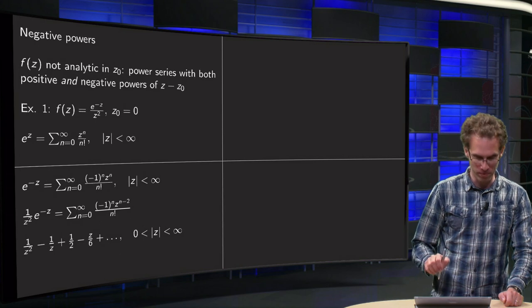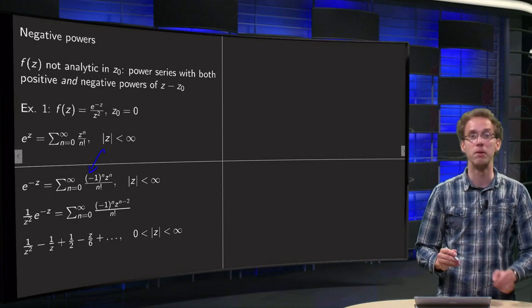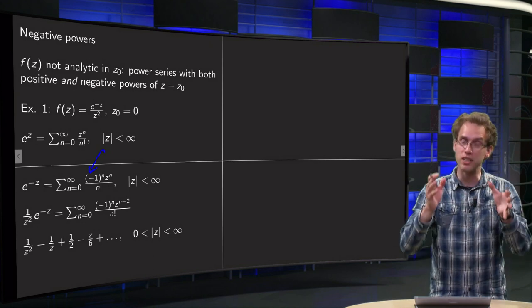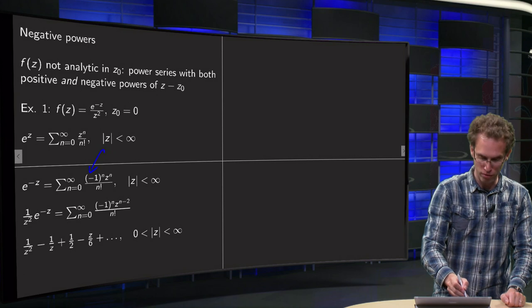And then we can form e to the power minus iz. You just get an additional factor of minus 1 to the power n because you get minus z to the power n equals minus 1 to the power n times z to the power n. Also converging everywhere.